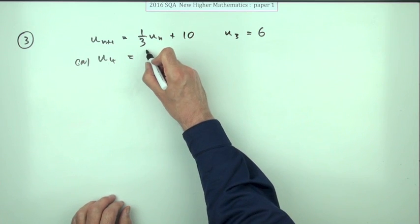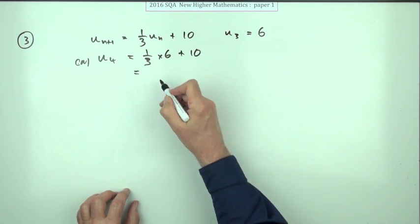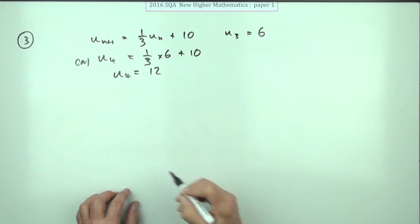So just pop that in then. It'll be a third of the term before, which is the 6, and add on 10. A third of 6 is 2, 2 and 10 is 12, and there you go.